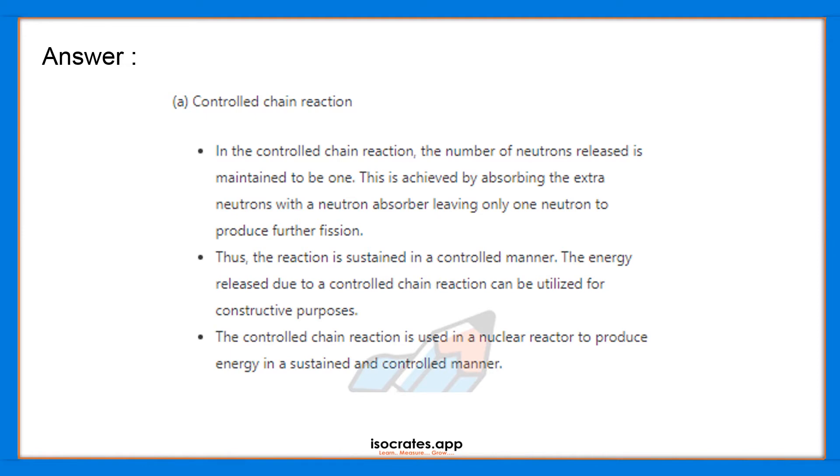Answer: Controlled chain reaction. In a controlled chain reaction, the number of neutrons released is maintained to be one. This is achieved by absorbing the extra neutrons with a neutron absorber, leaving only one neutron to produce further fission.